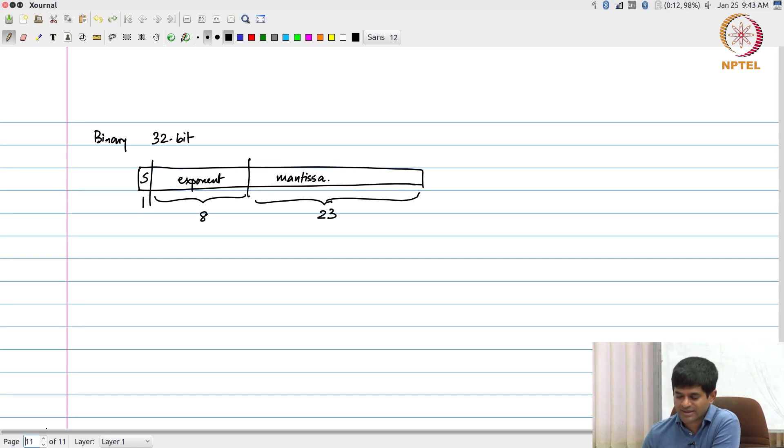So here what we say is, the mantissa, I will assume, always has a 1 in front of it, followed by 23 bits of mantissa.